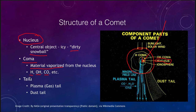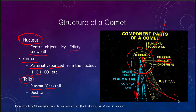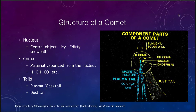Finally, we see the tails of a comet. Comets have two tails: a plasma or gas tail and a dust tail. We can see the plasma tail going straight back and the dust tail curving off to the side.